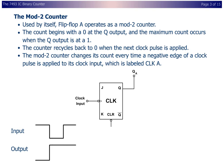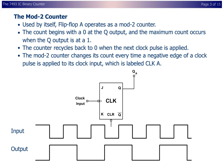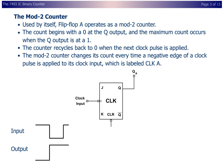The mod-2 counter. Used by itself, flip-flop A operates as a mod-2 counter. The count begins with a 0 at the Q output, and the maximum count occurs when the Q output is at a 1. The counter recycles back to 0 when the next clock pulse is applied. The mod-2 counter changes its count every time a negative edge of a clock pulse is applied to its clock input, which is labeled CLK-A.